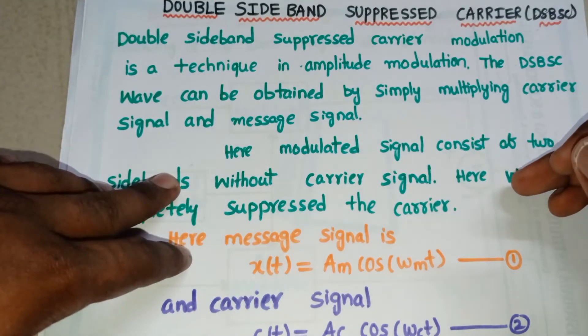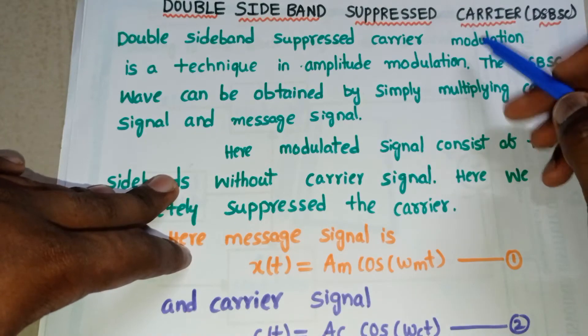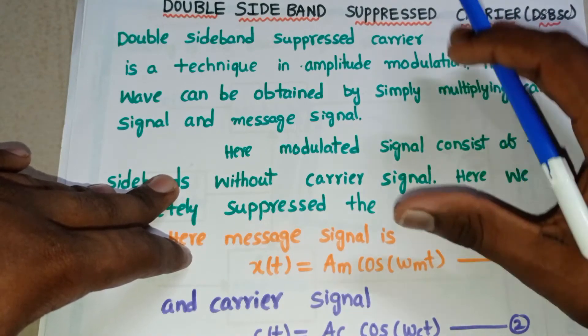Hello friends, in this video we will discuss Double Sideband Suppressed Carrier Amplitude Modulation. This is one of the types of amplitude modulation.